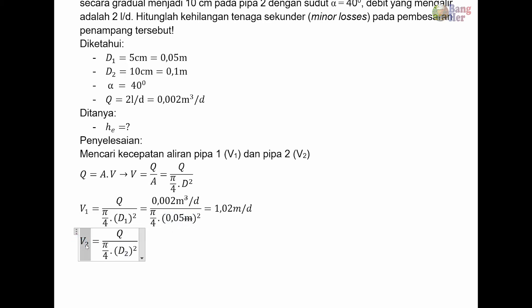Selanjutnya, kecepatan aliran pada pipa 2 persamaannya sama, tinggal diganti untuk diameter 2. Debitnya masih sama, yaitu 0,002 meter pangkat 3 per detik. Karena di pipa tidak ada kebocoran, jadi pasti debit yang mengalir pada pipa 1 sama dengan debit yang mengalir pada pipa 2. Diameter pipa 2 adalah 0,1 meter dikuadratkan. Kalau dihitung, maka kita akan memperoleh hasil kecepatan di pipa 2 adalah 0,25 meter per detik.